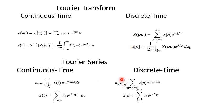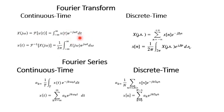Another thing to note is the scaling factor. In the analysis equations we scale by 1/T and 1/N respectively, whereas in the Fourier transform we use a constant scaling factor of 1/(2π) in the synthesis equation. This is a brief discussion about the discrete time and continuous time aperiodic signals — in short, about the Fourier transform and the Fourier series.